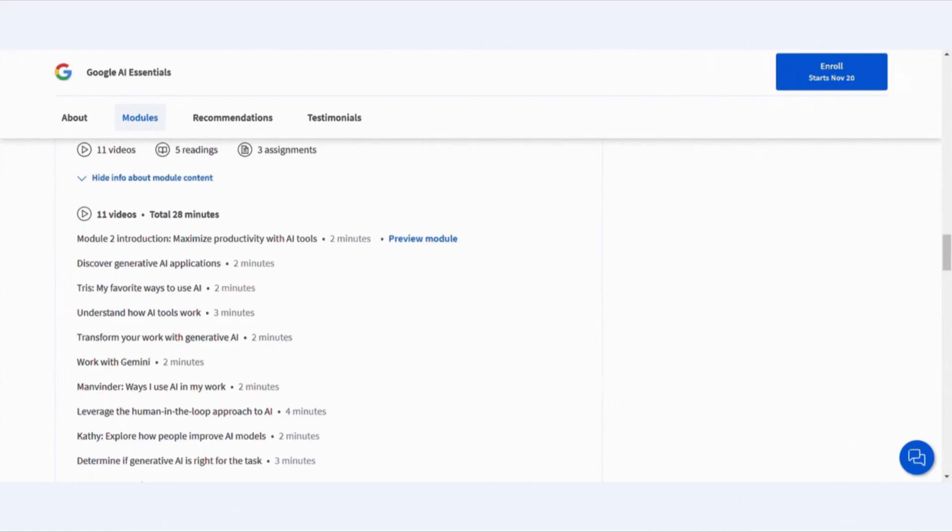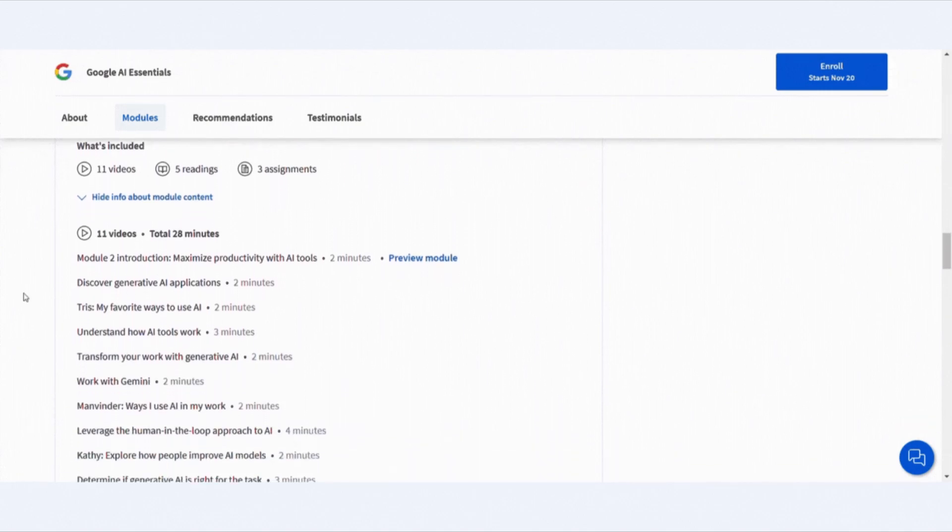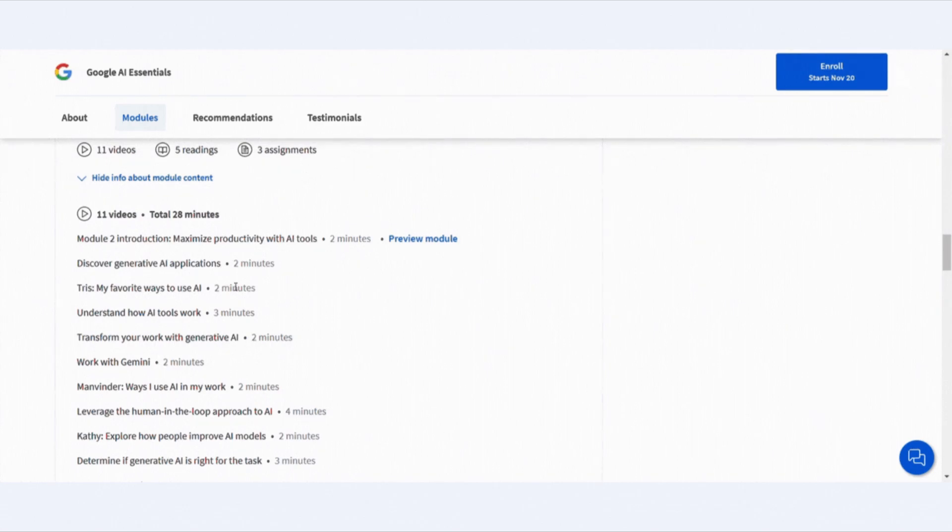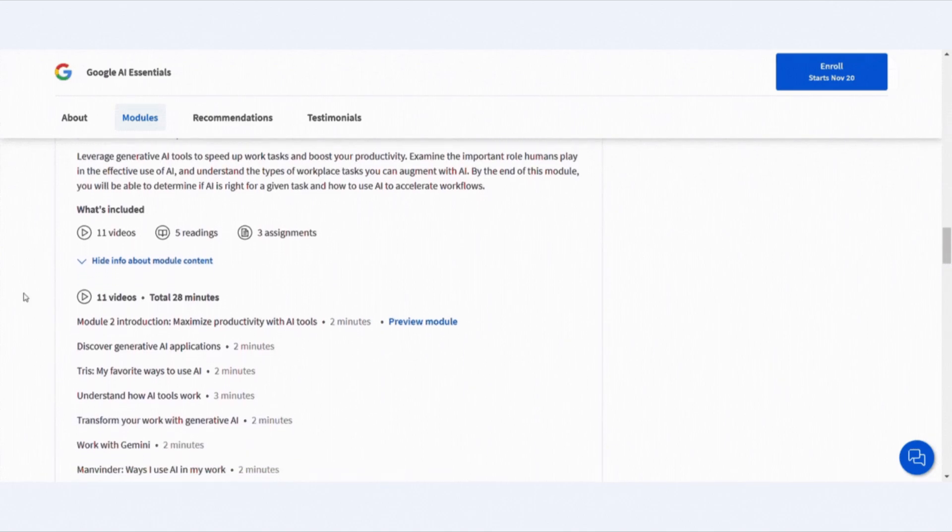Next, the course focuses on how AI can make life easier. You will see how AI tools can save time by summarizing reports, organizing tasks, or even brainstorming new ideas. These examples show how AI can improve both personal and work tasks. This part connects what you have learned so far to everyday life, making AI feel useful and practical.